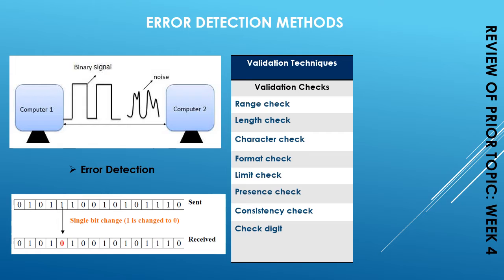There are various techniques to validate data that we can apply on a data field. Validation is basically a process of checking if data satisfies certain criteria when you are inputting that data. We can apply different sorts of validation checks on a field, for example: range check, length check, character check, format check, limit check, presence check, consistency check, and check digit.